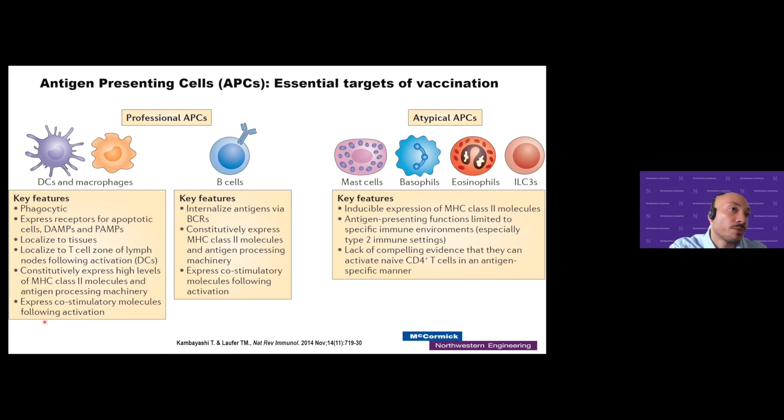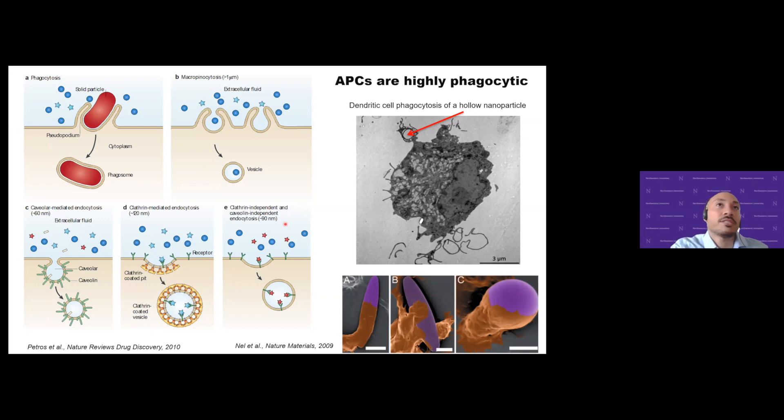Another important feature is that antigen-presenting cells express co-receptors, which is critical for how they instruct T cells to function. There are also atypical APCs — endothelial cells, mast cells, basophils — all these different cell types can also have functions similar to APCs. Many of them require being induced to do these functions, or they do it in a weaker, less effective version.